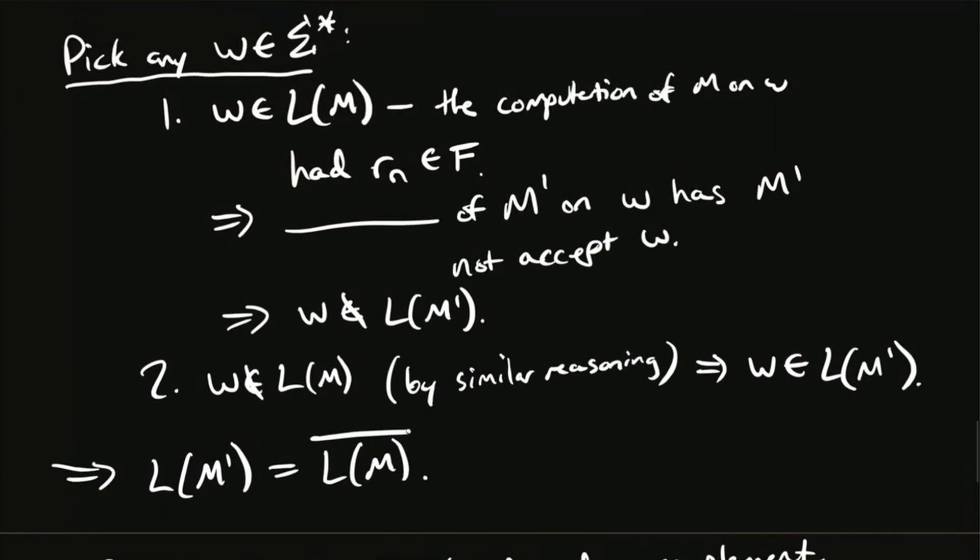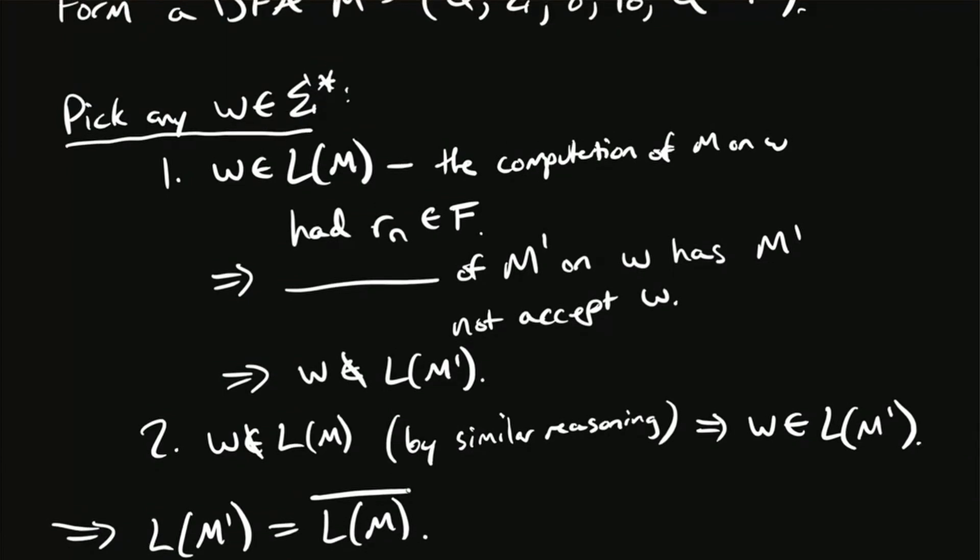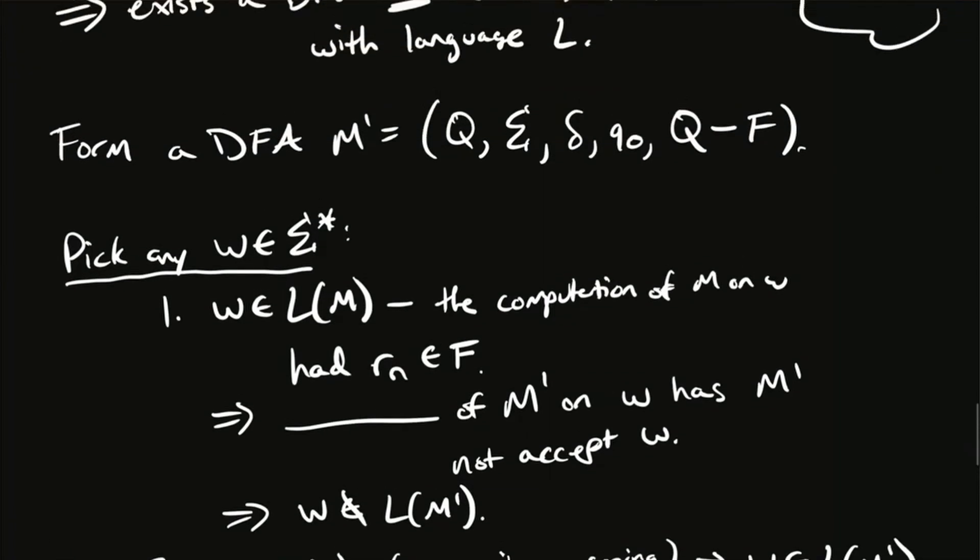So that's probably more detailed than we actually needed here. You could have just said that whatever the computation M did on the string, it landed in some state, whether it's final or not. If it was final before, it's not now in M prime. And if it wasn't before, it is now in M prime, because we switched the final states. And so if we accepted the string before, we don't now. And if we didn't accept the string before, we do accept it now. Any questions on this?